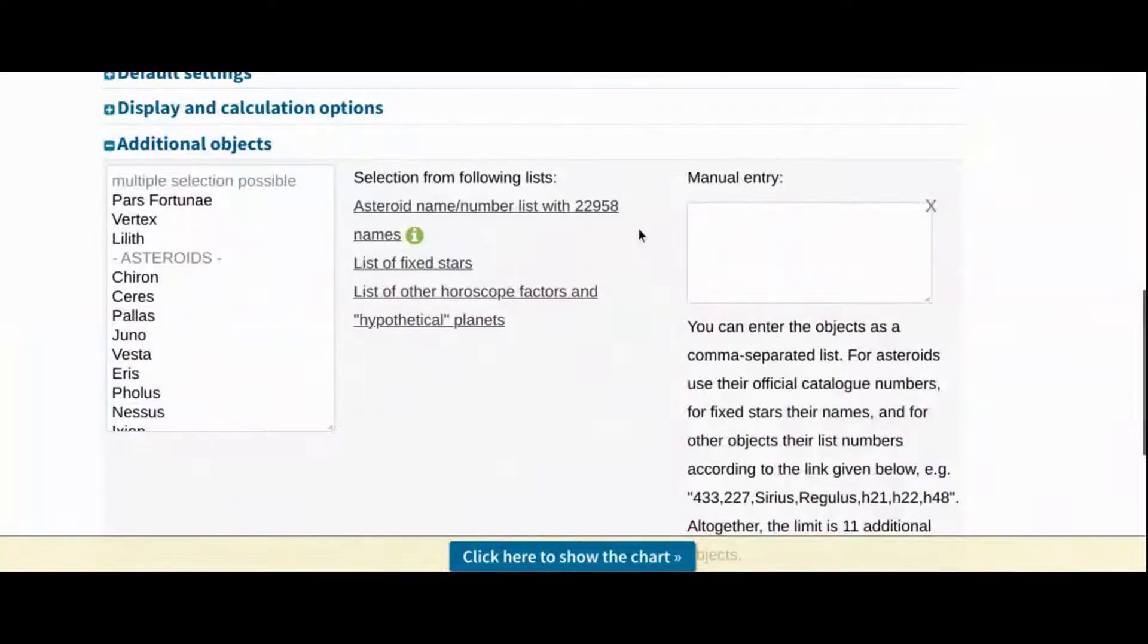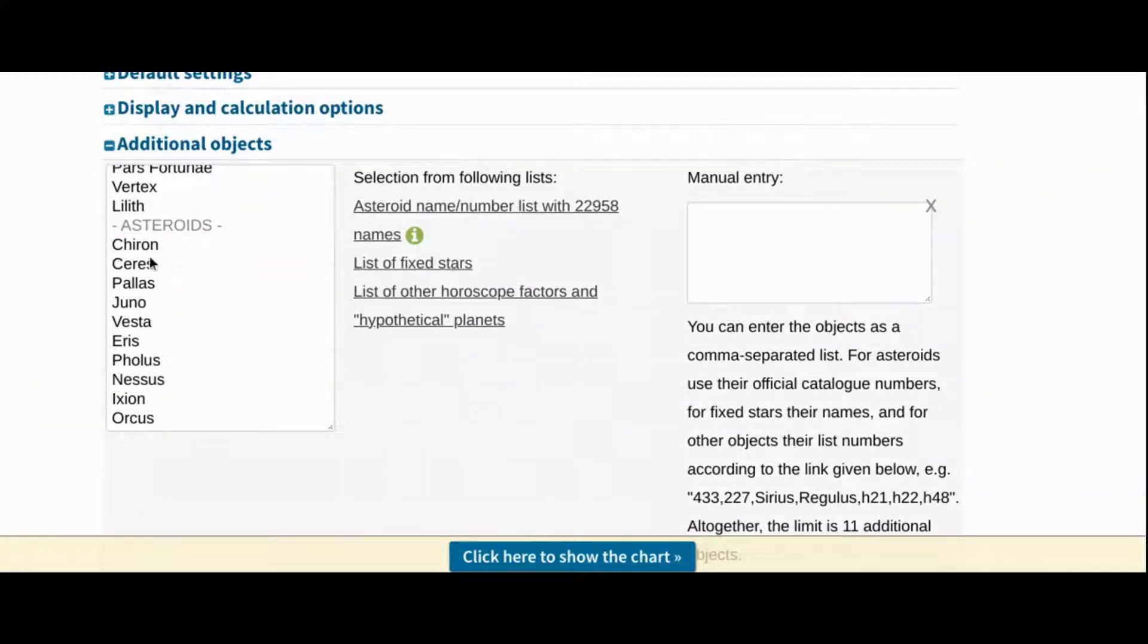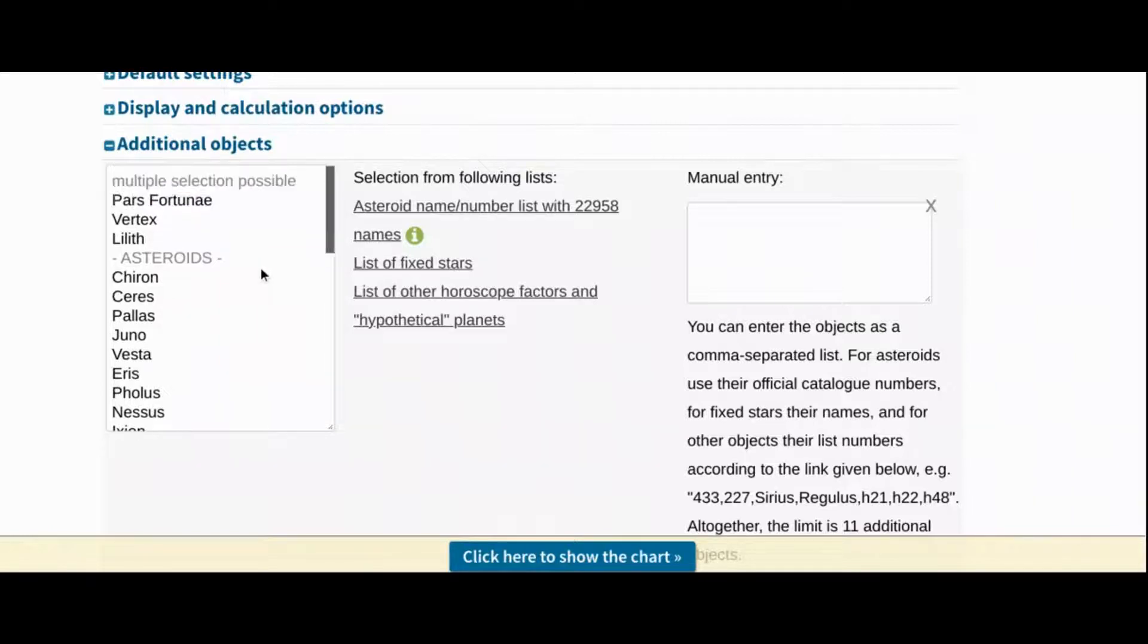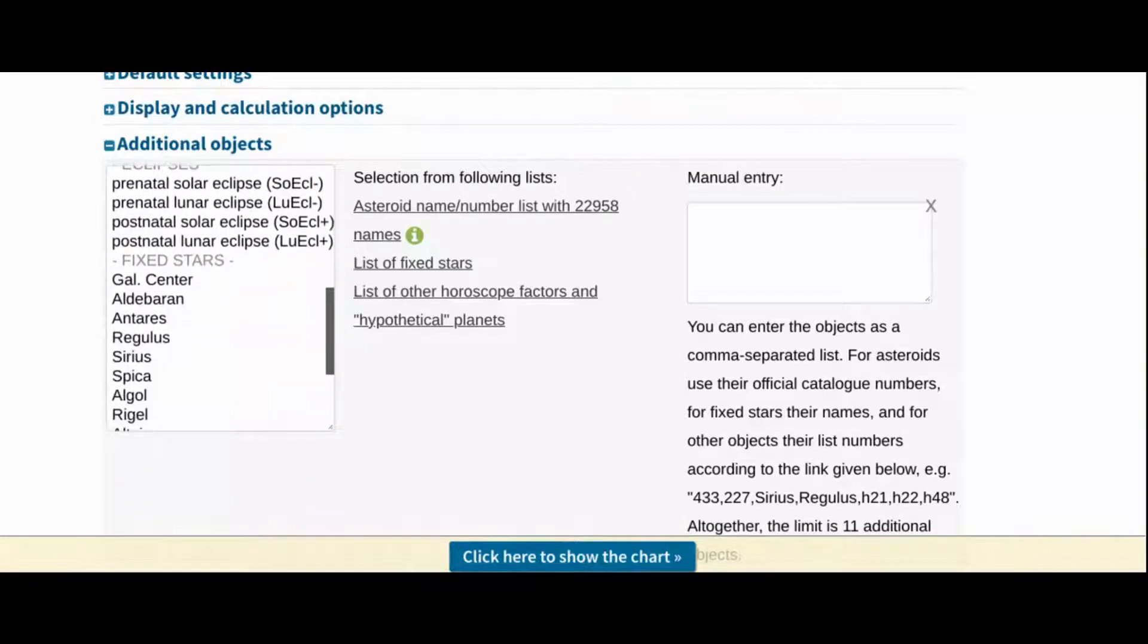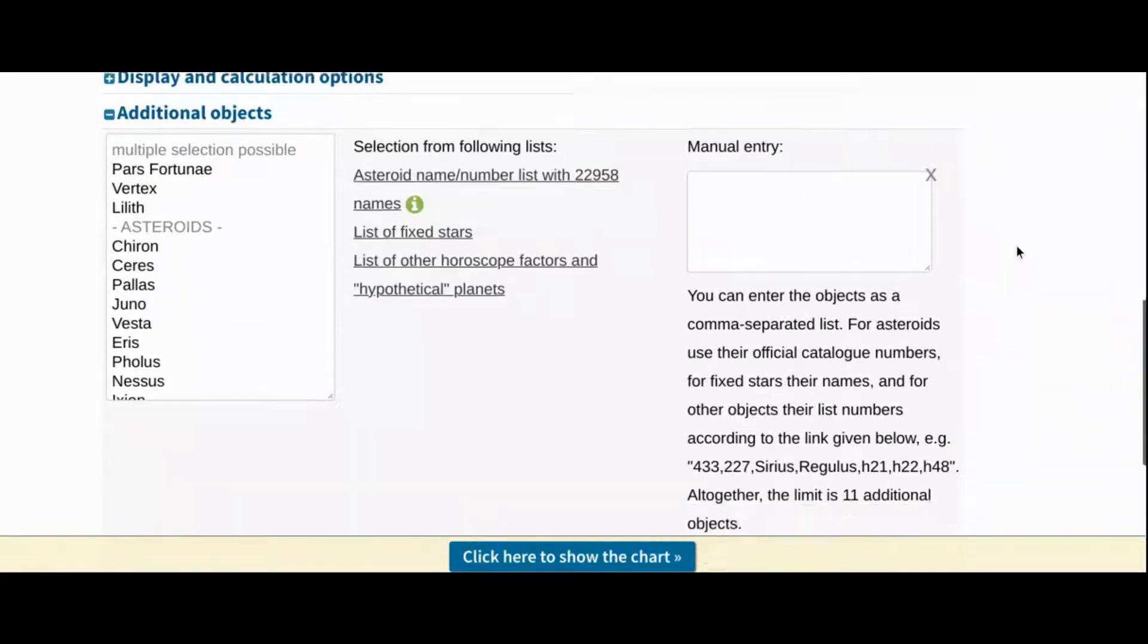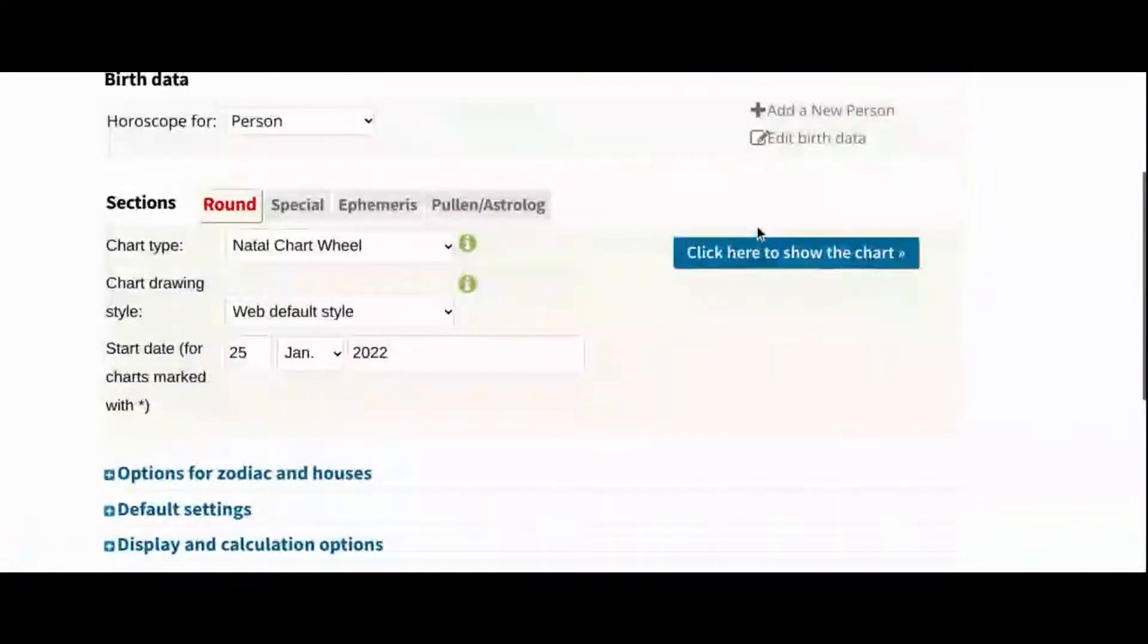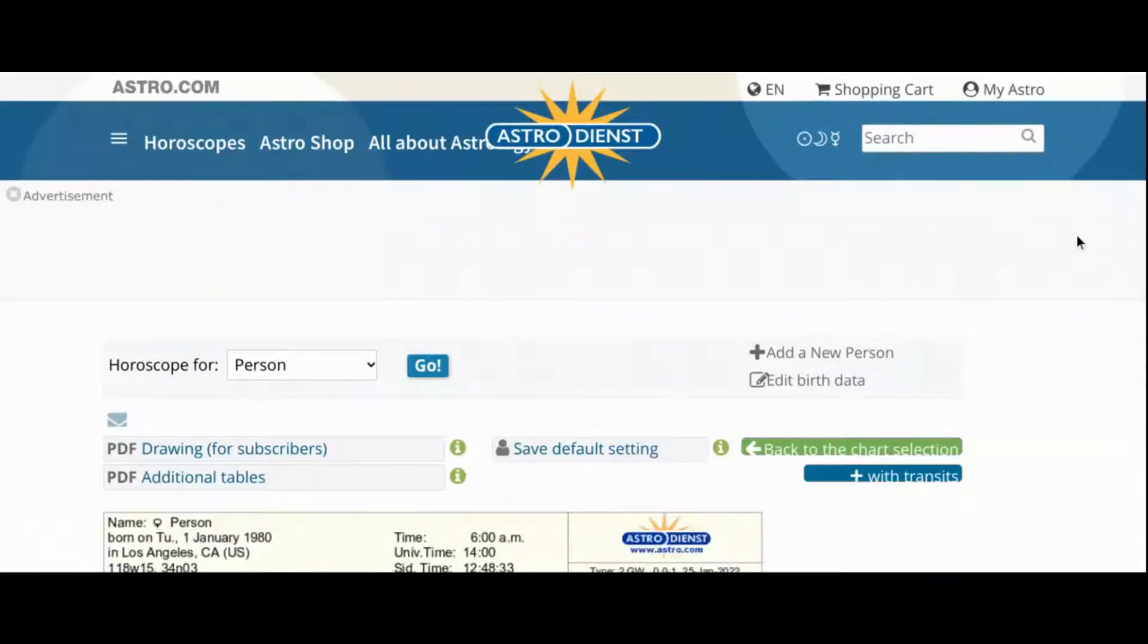You can add asteroids and other hypothetical planets and bodies. There are a bunch in the menu, and you can also find them alphabetically. You can see there's currently over 20,000 asteroids. And if you already know the number assigned to an asteroid or a hypothetical body, you can type them into the manual entry box instead of having to search for it. You're currently limited to 11, but you can create a chart with 11, go back and choose another 11, go back to another 11, on and on. Now click on Click Here to Show the Chart.